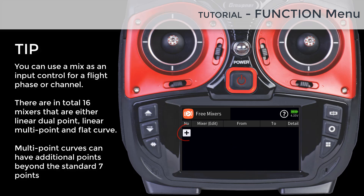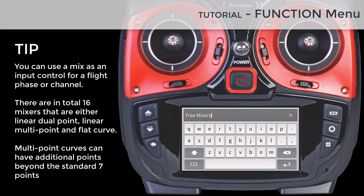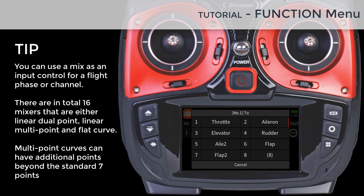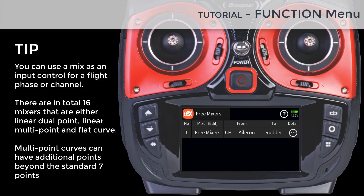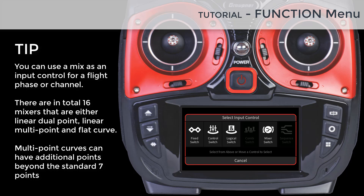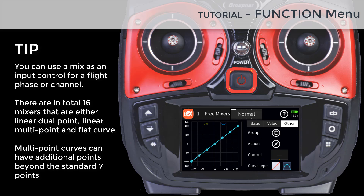To add a new mix, tap on the plus icon. You can name the mix or change its order in the mixers menu. The front field provides the option to use either another channel in the mix or a control, which can be a switch or any of the other available input control methods. The default is channel, and by tapping on the CH field you can change it to switch and select an input control. Tapping on the detail icon will show you the mix detail menu. Like most curve mix menus on the MZ32, the free mixers menu has identical control settings. Tapping on the other field lets you set the mix as global or phase dependent, activate the mix, assign a control to turn the mix on or off, and set the curve and spline type. When these have been set, you can set the mix values, curve points, and offset in the value fields.